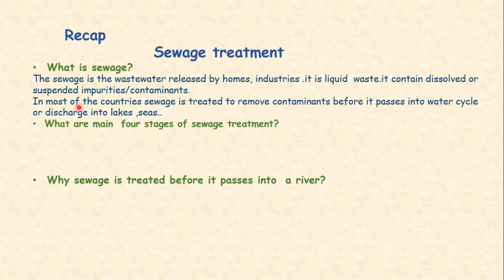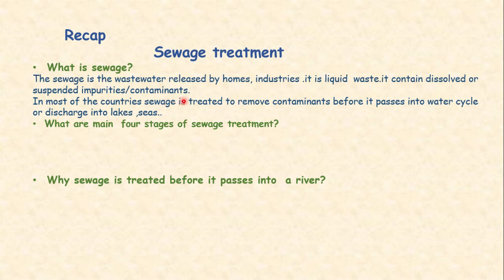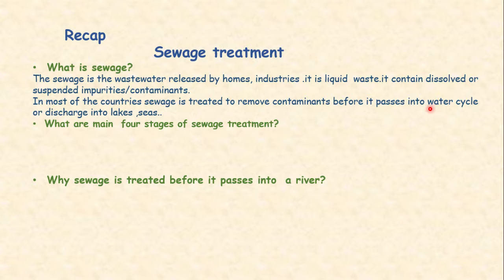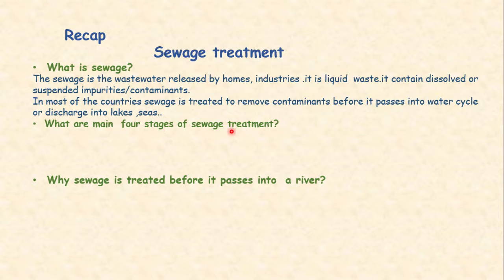Sewage is the liquid waste containing dissolved or suspended impurities, which are called contaminants. There is a need to treat sewage because it contains these suspended or dissolved contaminants. Before this water enters the water cycle or is discharged into lakes and seas, the contaminants must be removed. So sewage water is treated before it passes to the water cycle or is discharged into lakes and seas.